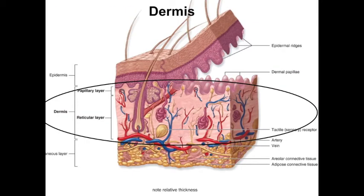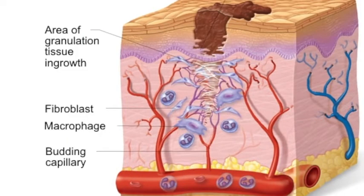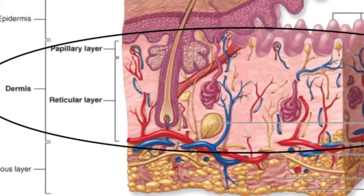Unlike the epidermis, which replaces itself every month, the fibrous tissue of the dermis is relatively permanent throughout life. If there is damage to the dermis, it can be repaired, although not as cleanly as in the epidermis. Mesenchymal stem cells become activated and produce more fibroblasts, which affect the repair with newly formed collagen, but this often leads to scarring and deformities in the dermis.